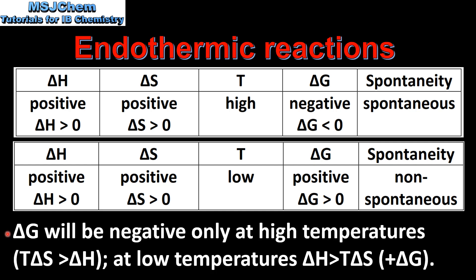So delta G will be negative only at high temperatures when the product of the temperature times the change in entropy is greater than the change in enthalpy. At low temperatures the change in enthalpy is greater than the product of the temperature times the change in entropy, and therefore delta G will be positive.